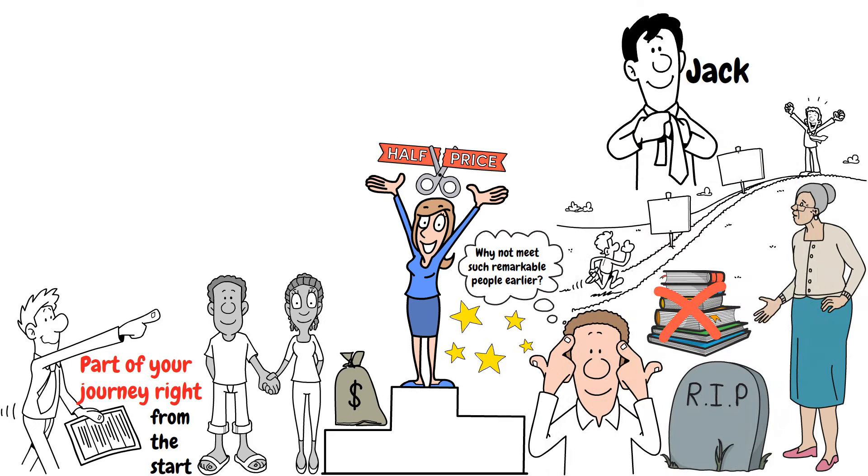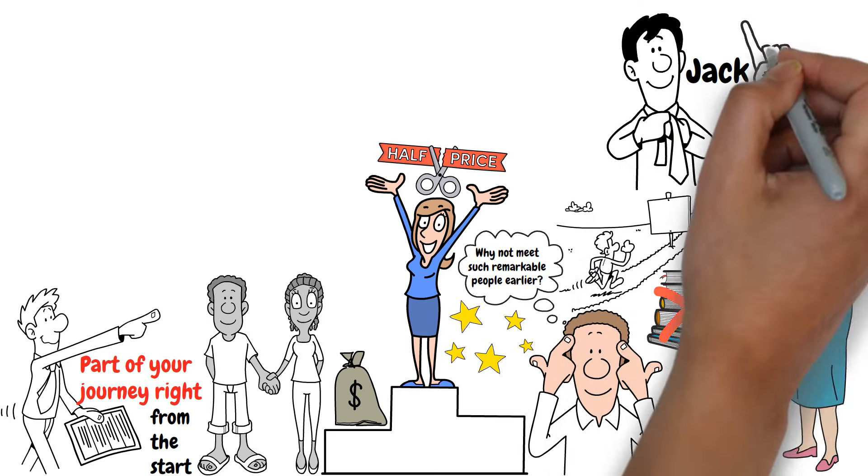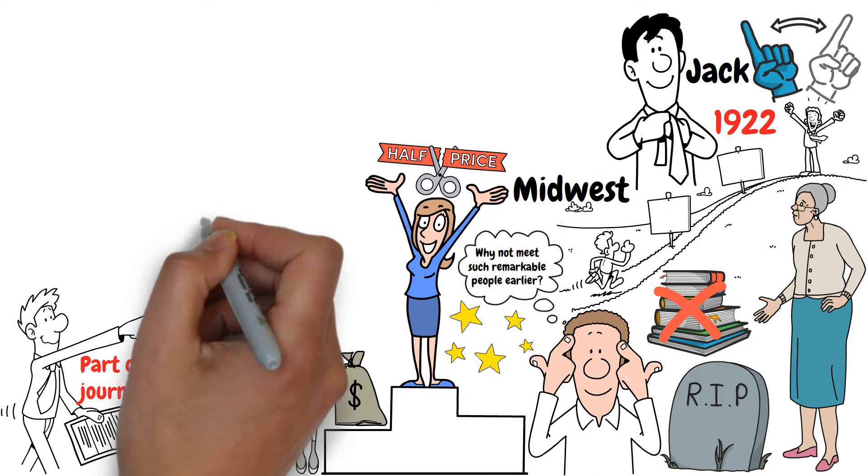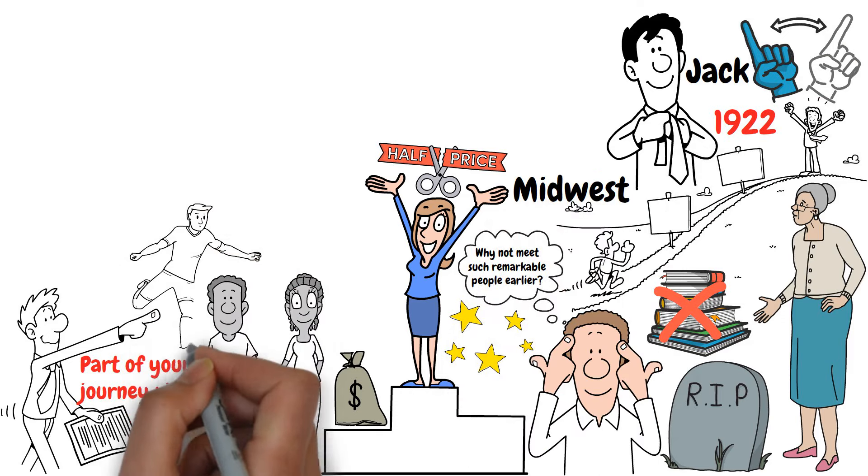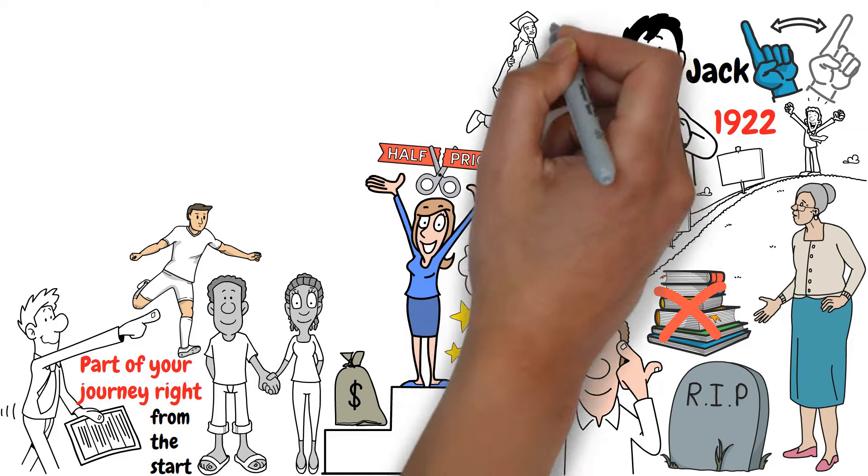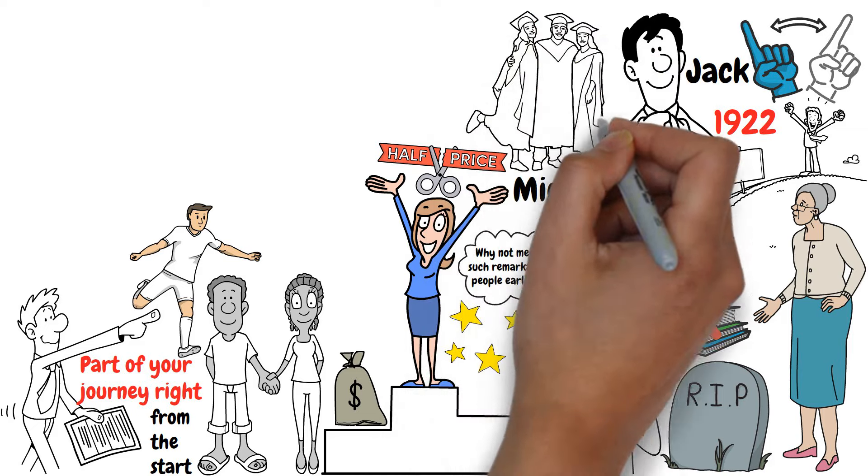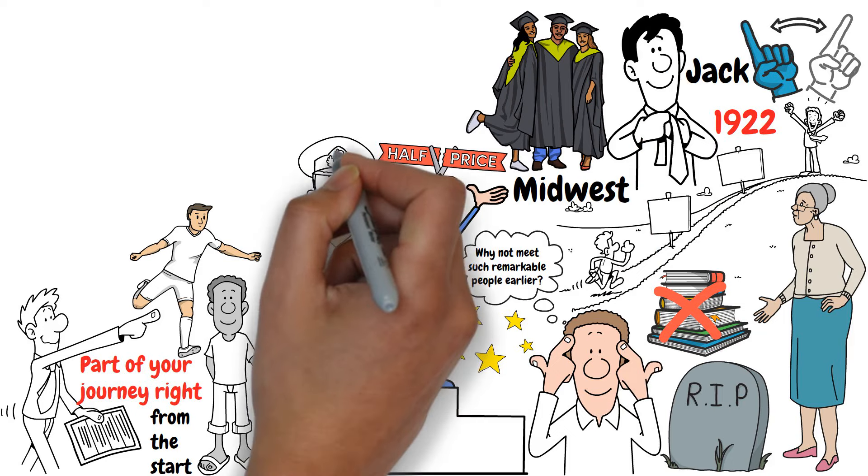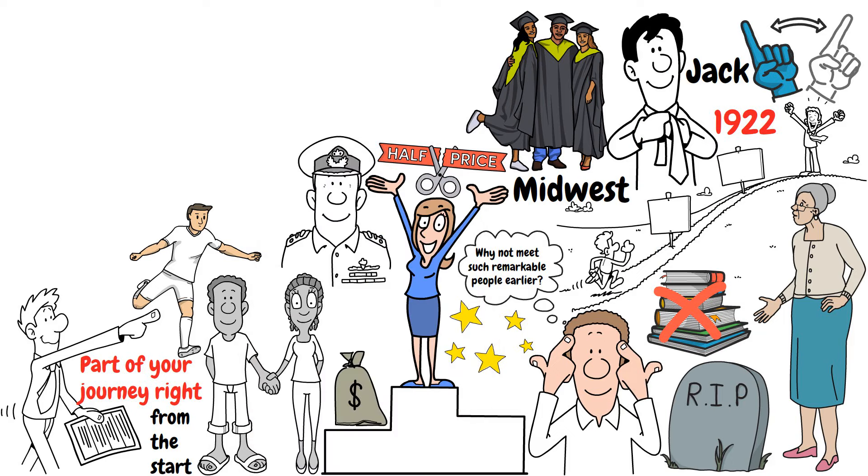Warren Buffett's speech continues. Let's explore the story of another small business owner, a man named Jack. I once tried to buy his business, but he smartly said no. Born in 1922, right before me, Jack grew up in the Midwest. He liked sports more than schoolwork, but here's an interesting fact: The company he started hires more college graduates every year than any other company in the US.